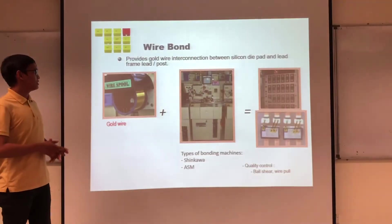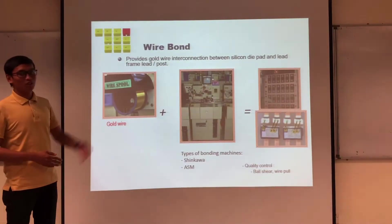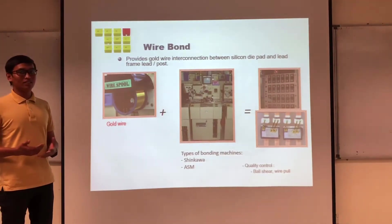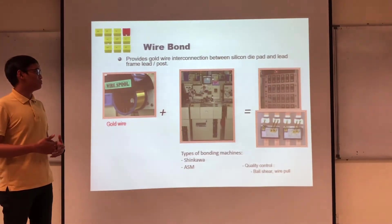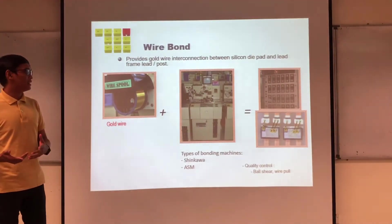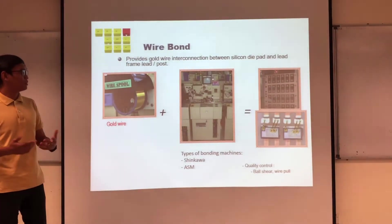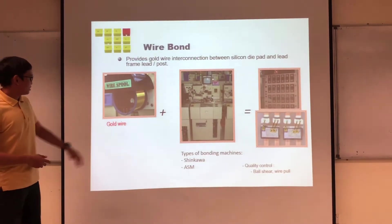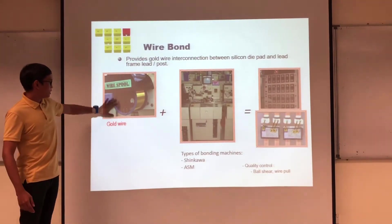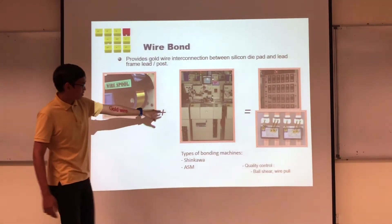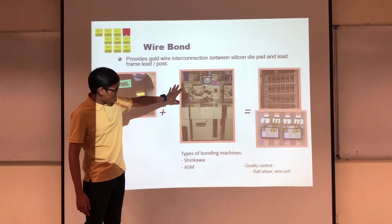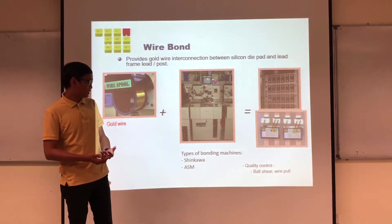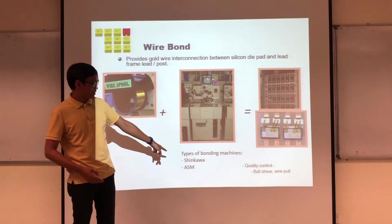Next is Wire Bond. Wire Bond provides a gold wire connection between the silicon die pad and the lead frame lead post. This shows the gold wire used, and the types of wire bonding machines including Shinkawa and ASM.